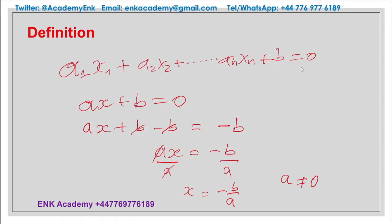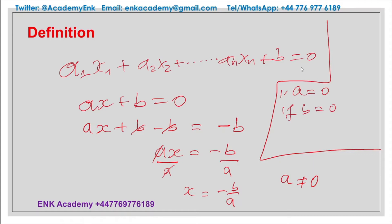In general, a should be different from 0. In this case, the name unknown is sensibly given to the variable x. In the case where a equals 0, then if also b equals 0, then every number is a solution. However, if a equals 0 and b is different from 0, there is no solution.